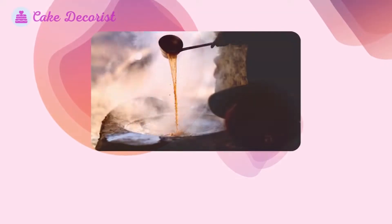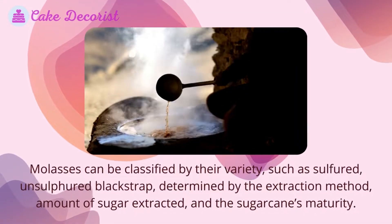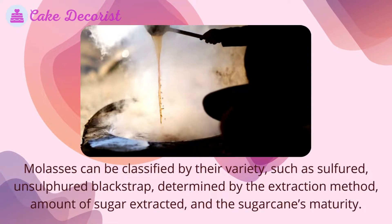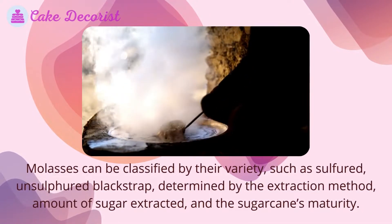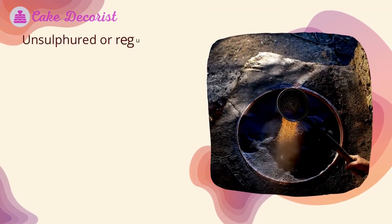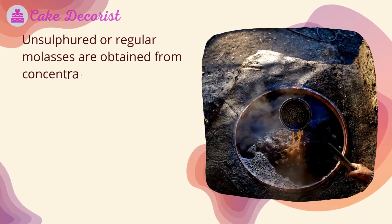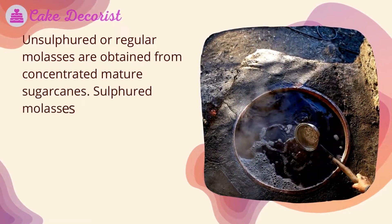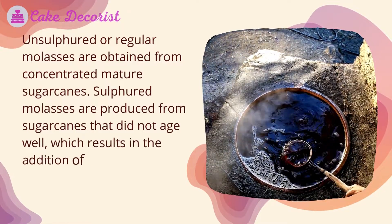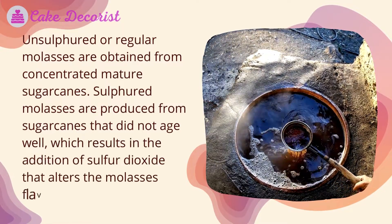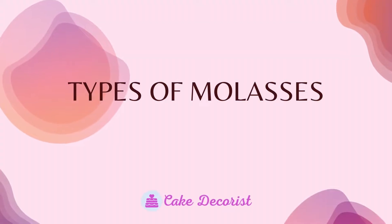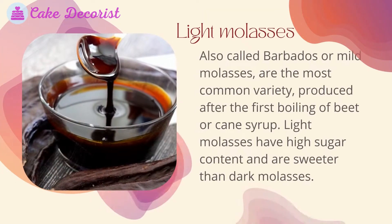Molasses can be classified by their variety — such as sulfured, unsulfured, and blackstrap — determined by the extraction method, amount of sugar extracted, and the sugar cane's maturity. Unsulfured or regular molasses are obtained from concentrated mature sugar canes. Sulfured molasses are produced from sugar canes that did not age well, resulting in the addition of sulfur dioxide that alters the molasses flavor.